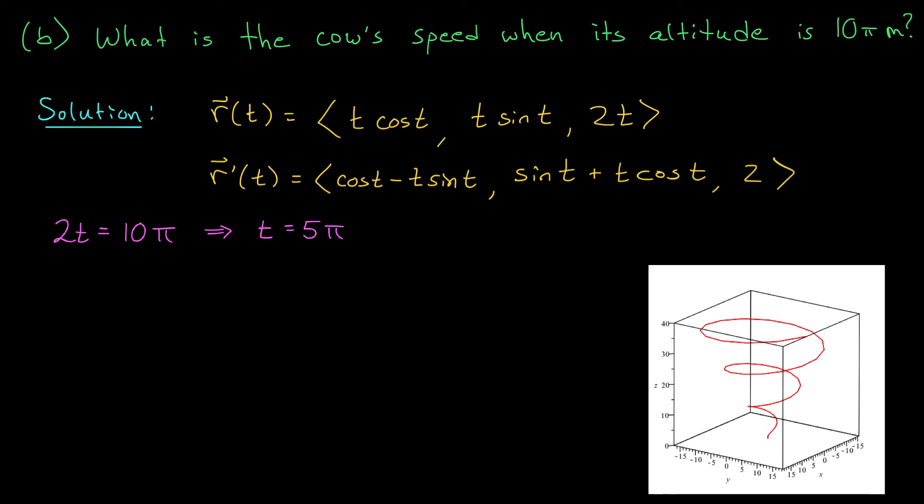This is the time at which we want to compute the cow's speed. We'll start by finding its velocity at this time. Its velocity is r prime of 5 pi. We're plugging 5 pi into this vector here. That gives me cos of 5 pi minus 5 pi sine of 5 pi. In the second component, I have sine of 5 pi plus 5 pi cos of 5 pi. And finally, 2 in the z component.